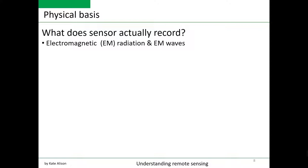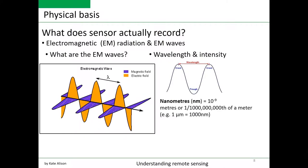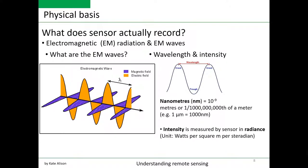Remote sensing sensors record electromagnetic radiation and electromagnetic waves. Electromagnetic waves are characterized by wavelengths and intensity. Electromagnetic wavelength is usually measured in nanometers and intensity in radiances. With this information in the background, let's now move to the next slide.